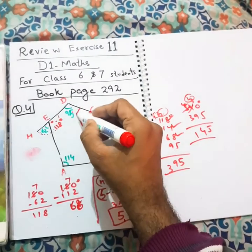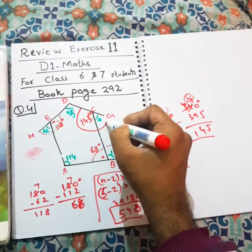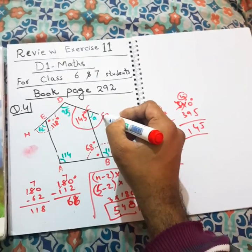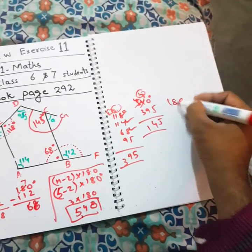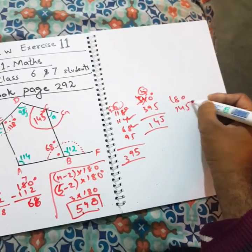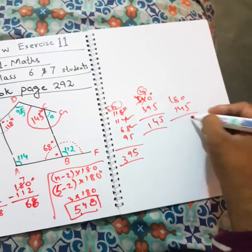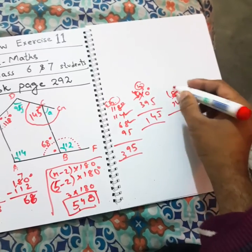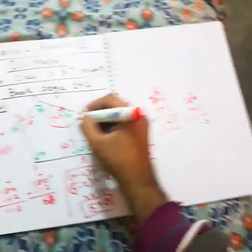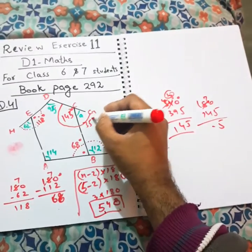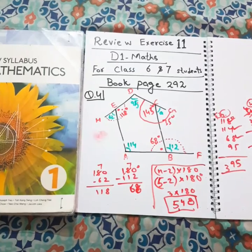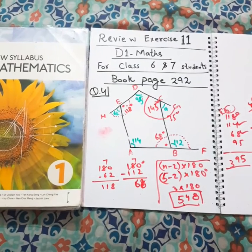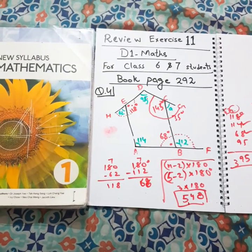We know that from here to here is 180 degrees, and from 180 degrees when we subtract 145, we get 35 degrees. So angle A is 35 degrees. You can watch this video again if you have any confusion. Thank you for watching. Allah Hafiz.